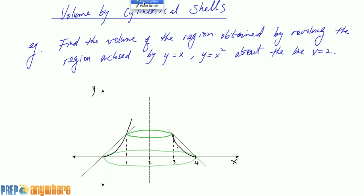Okay, so do you guys recall this picture? Y equals x and y equals x squared. It's this area right here. You rotate that about this line and we get this kind of upside down bowl that's bottomed out.